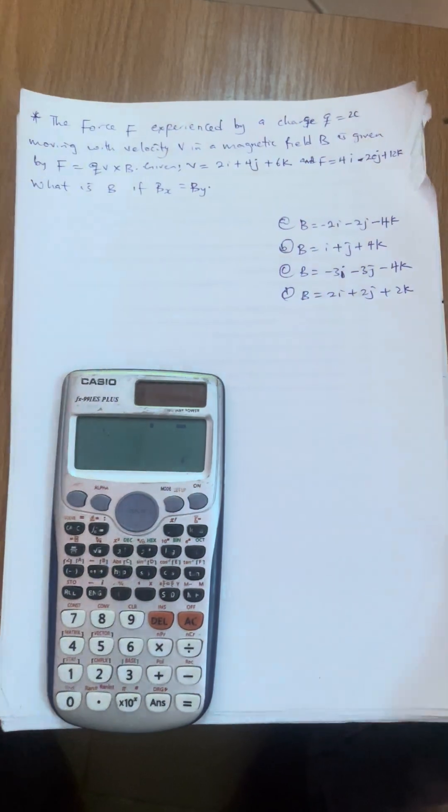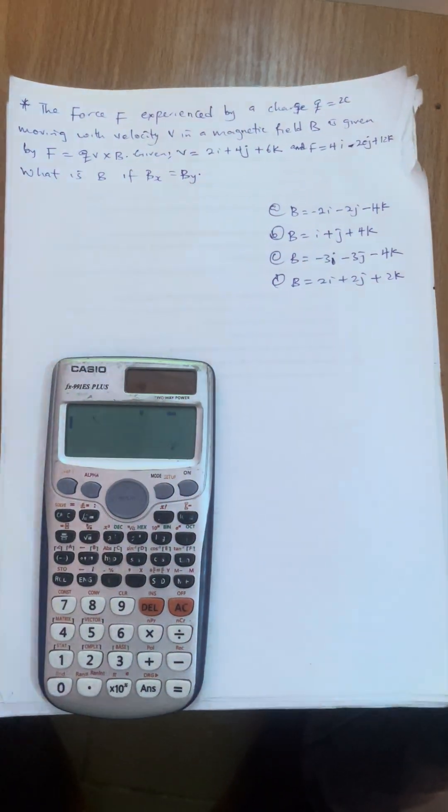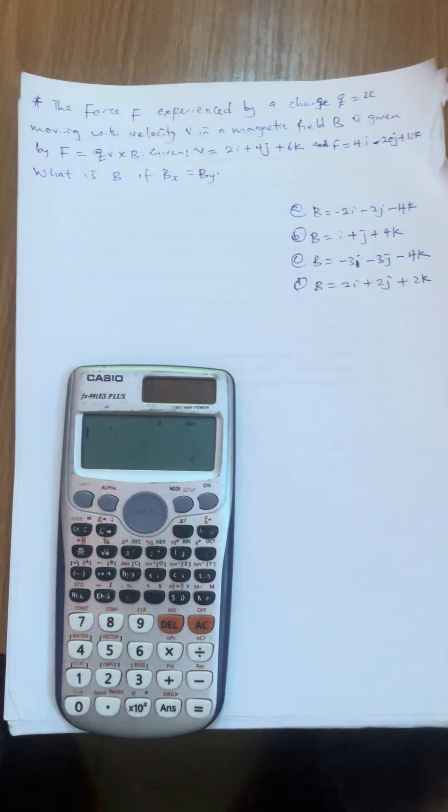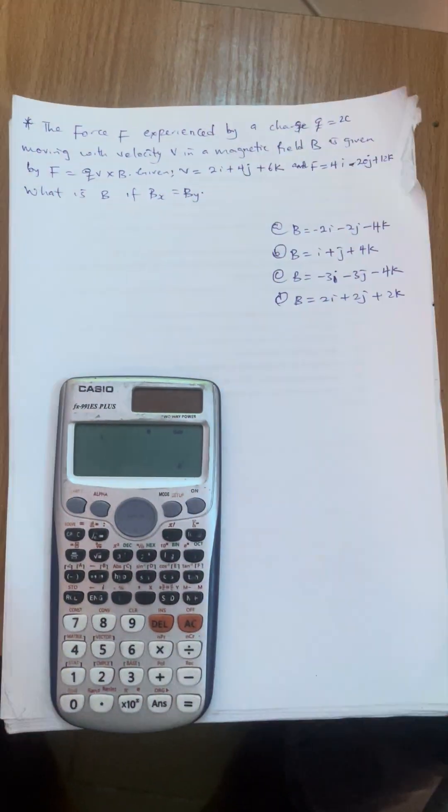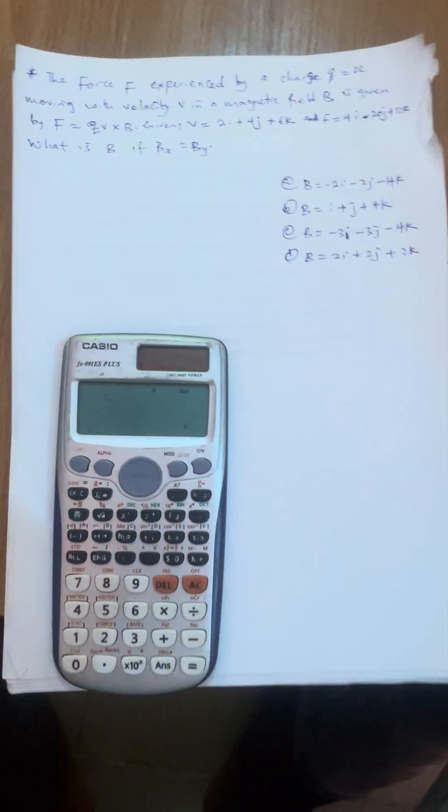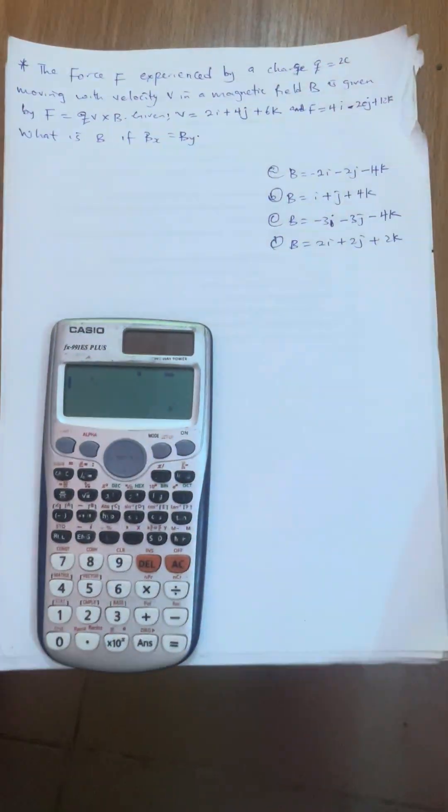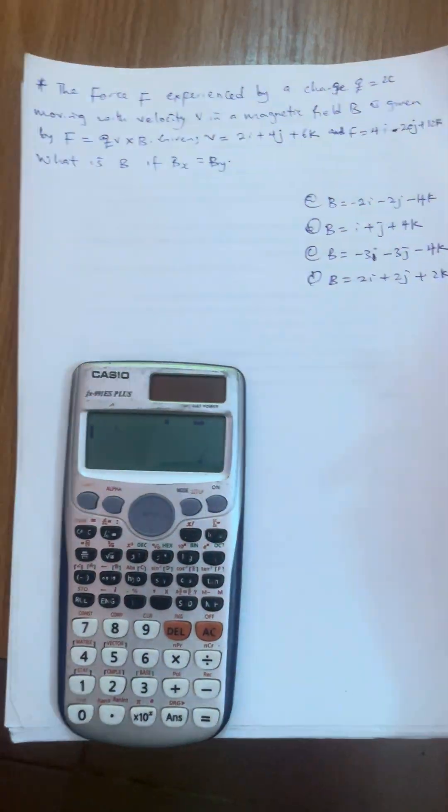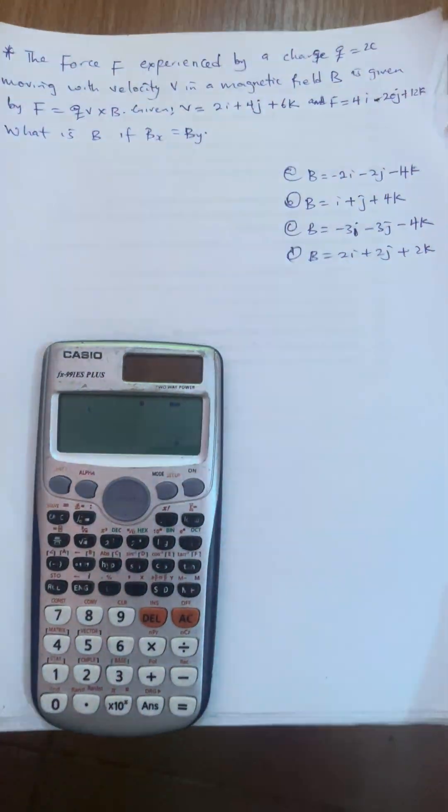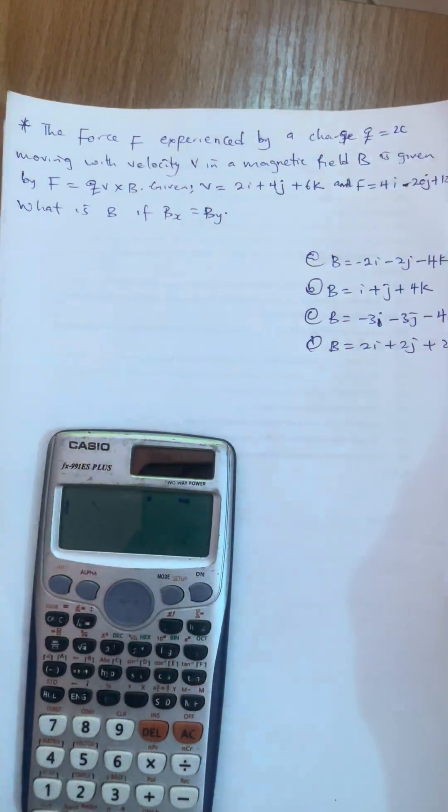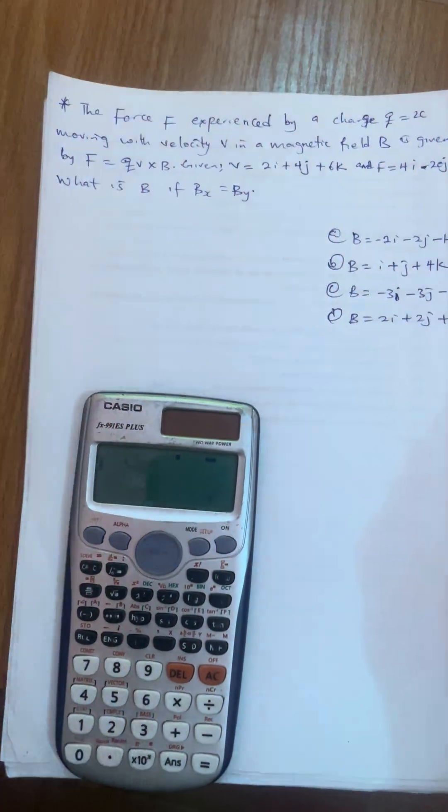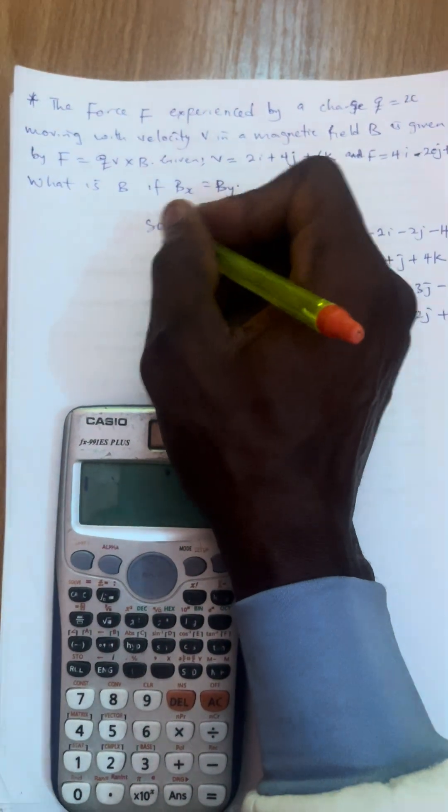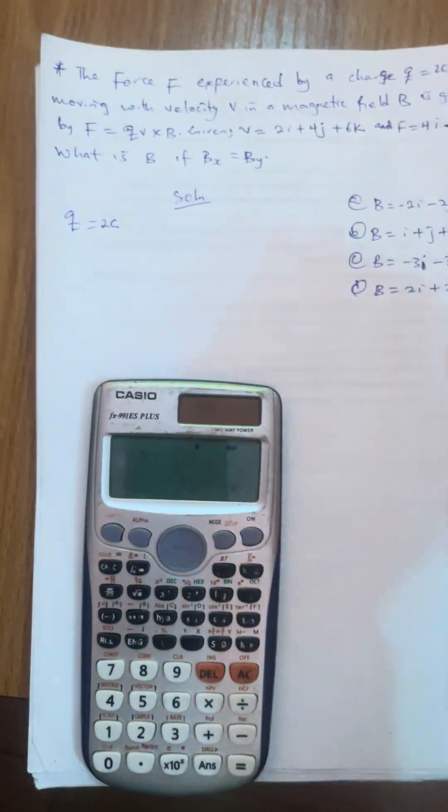Now assuming you are given this type of question in the CBT exam, trust me, you cannot avoid using your hand method solving this kind of question. Because if I start using hand to solve this type of question now, the solution is very long. But I can make use of the options given to me here in order to solve the question. The question says the force experienced by a charge Q equals 2C. That shows that the charge Q we are given is equal to 2C.